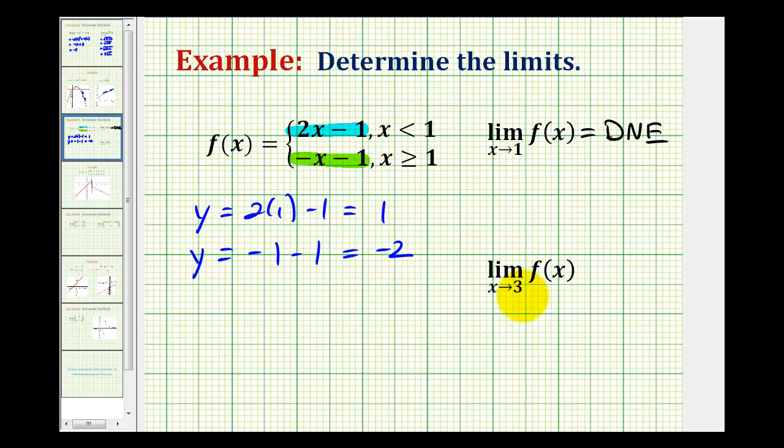And if we approach 3 from the right, we'd also be on this line, which means we can determine the second limit by performing direct substitution by replacing x with 3 on the line y equals negative x minus 1. So we'd have negative 3 minus 1, which is equal to negative 4.